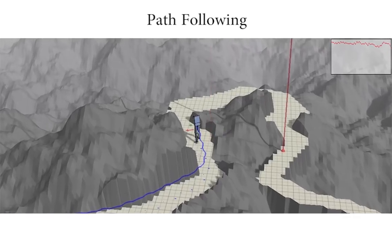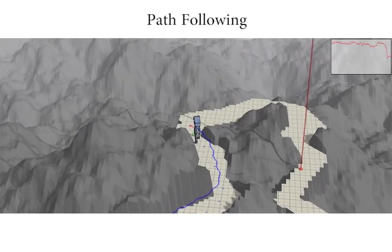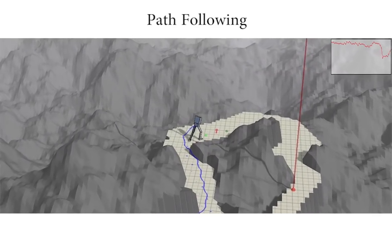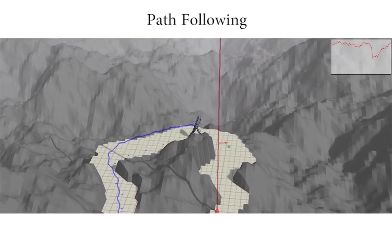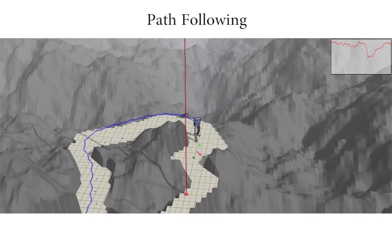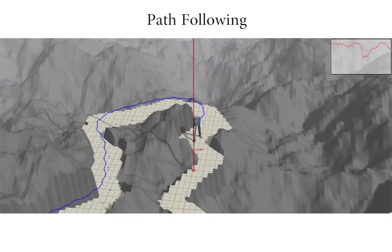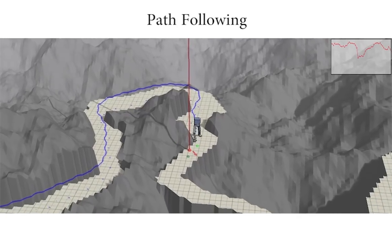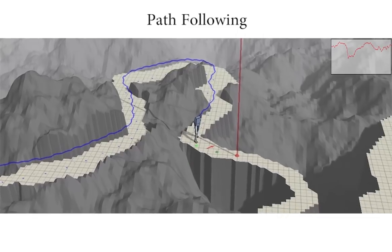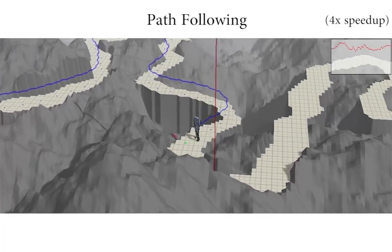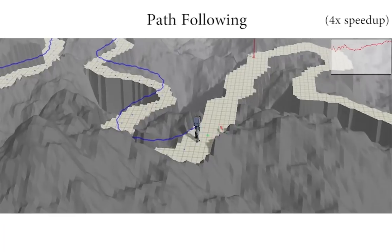The path following high-level controller learns how to navigate on narrow pathways with a varying width by providing step targets to the low-level controller. Although the footstep-based goals that the high-level controller provides to the low-level controller are unattainable, the high-level controller learns to specify goals that elicit the desired behavior from the low-level controller.